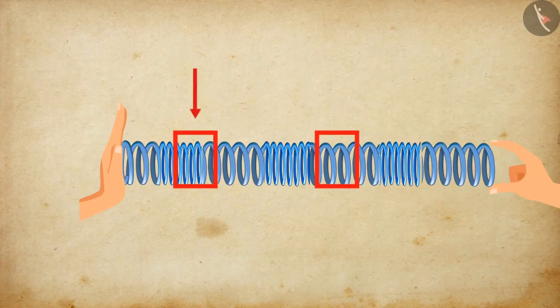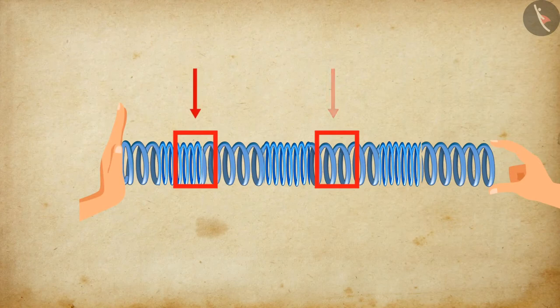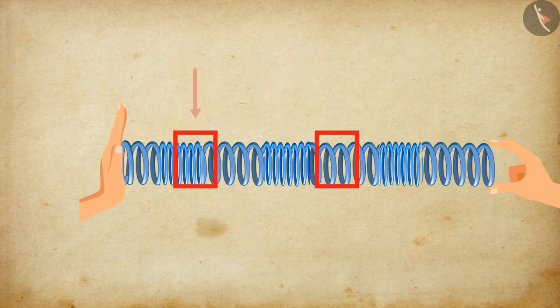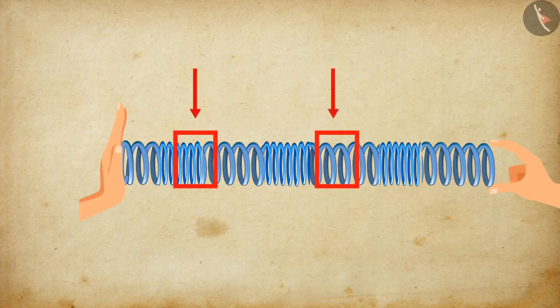Some regions of the coils will become closer, while some regions of the coils will become further apart. The closer regions of the coil are compressions, and the further regions of the coil are rarefactions.